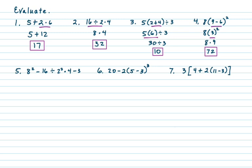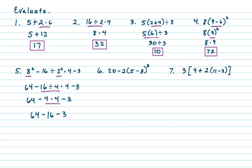On number five we have 8 squared minus 16 divided by 2 squared times 4 minus 3. First priority is exponents: 8 squared is 64 and 2 squared is 4. So we get 64 minus 16 divided by 4 times 4 minus 3. Next, the division comes before multiplication because it's on the left: 16 divided by 4 is 4. So 64 minus 4 times 4 minus 3. Then 4 times 4 is 16, giving 64 minus 16 minus 3. Working left to right: 64 minus 16 is 48, minus 3 is 45.